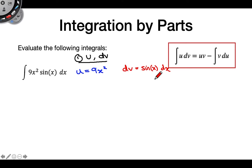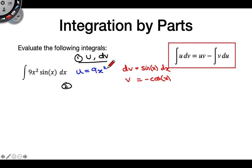Let's talk about why this is a good choice. If I integrate sin(x) to get v, I get negative cosine, which is not terrible — fairly simple. Whereas if I had to integrate 9x², that becomes 3x³, which is more complicated. By integrating sin(x), I save some complexity. And taking the derivative of 9x² gives something simpler — derivatives of polynomials get simpler and simpler.